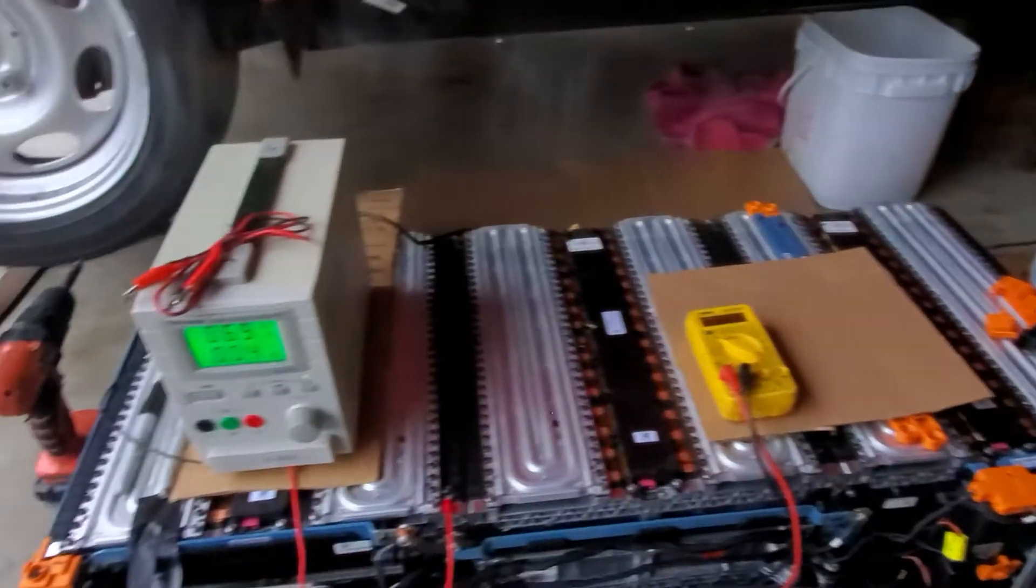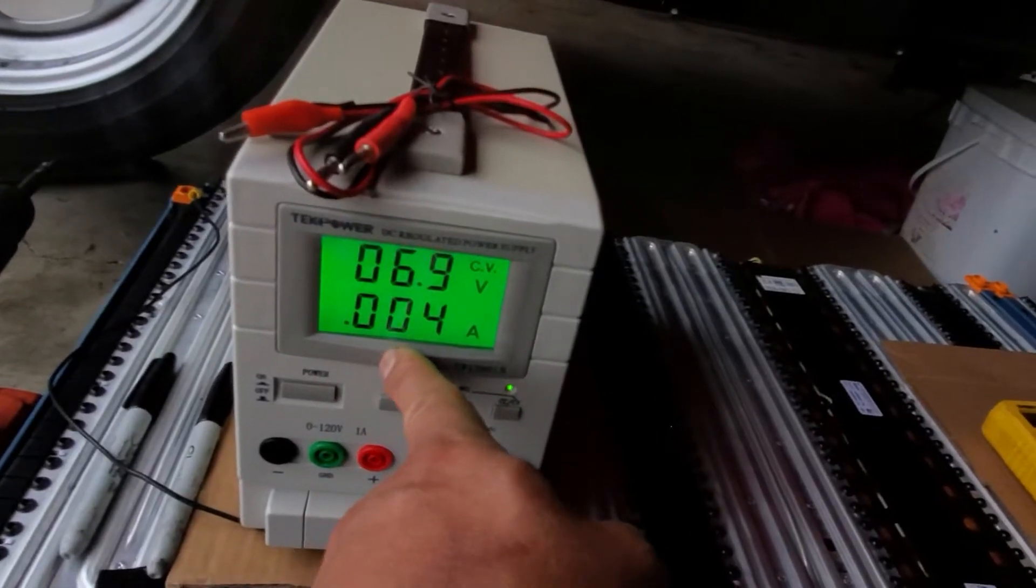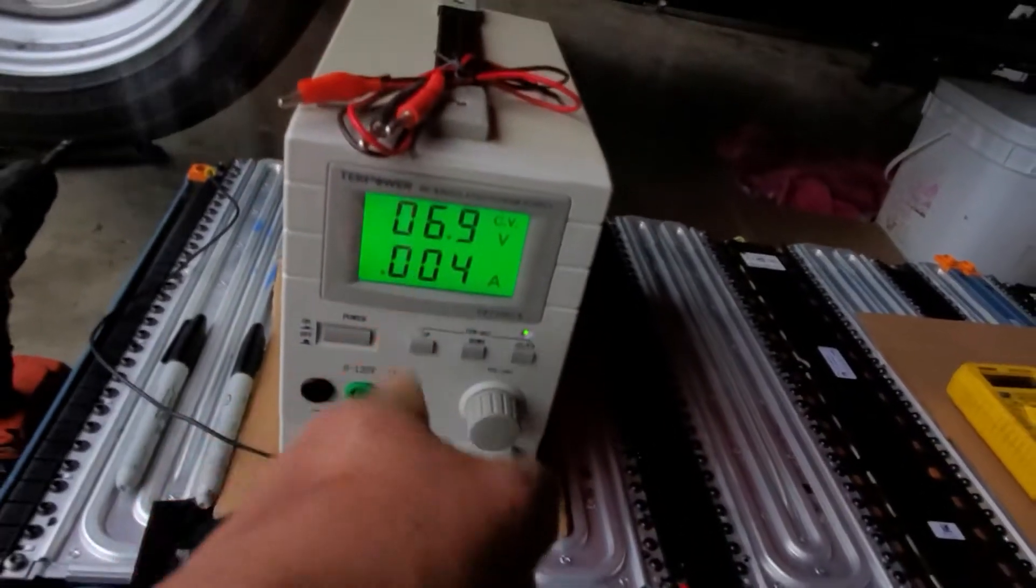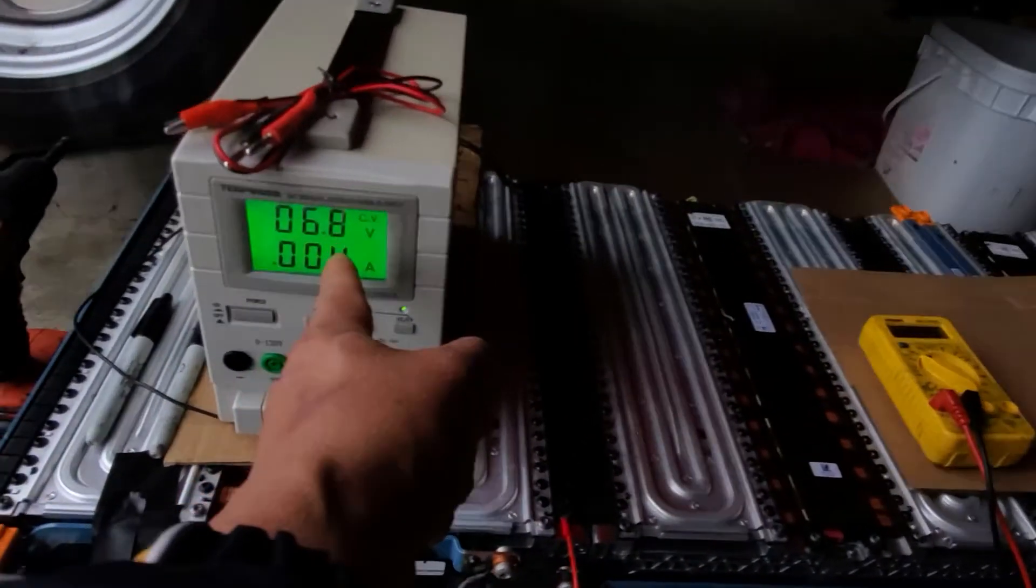I'm charging at 0.004 milliamp right now. The voltage on this module is 6.9, 6.8, it's getting higher.